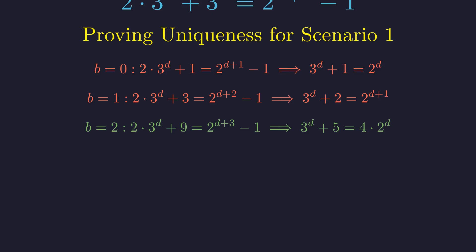For d greater than 3, the right side 4 times 2 to the d grows much faster than the left side. Similarly, for b greater than 2, no solutions can be found. Therefore, we have rigorously proven that b equals 2 and d equals 3 is the unique solution for this scenario.